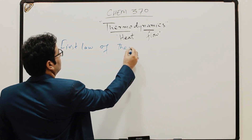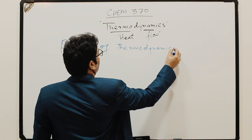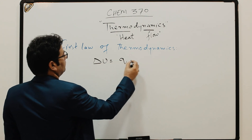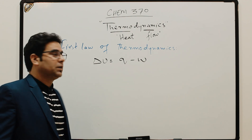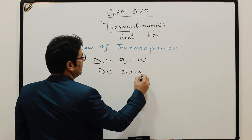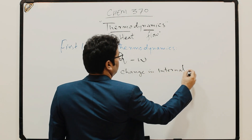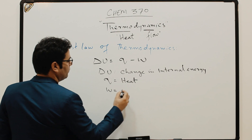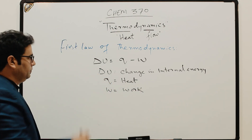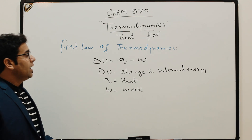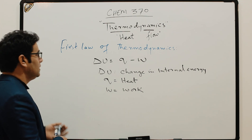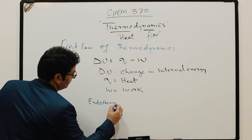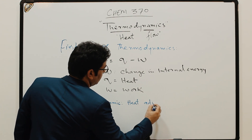For the first law of thermodynamics, the general equation is: ΔU = Q − W, where ΔU is the change in internal energy, Q is heat, and W is work done. Now for sign conventions: if it is an endothermic reaction, heat is absorbed and the sign of Q is positive. If it is an exothermic reaction, heat is released and the sign of Q is negative.